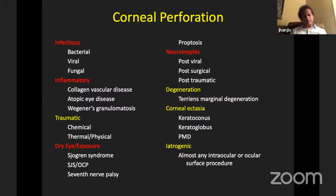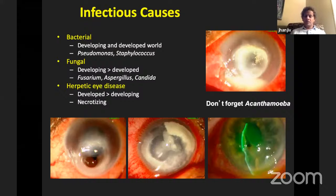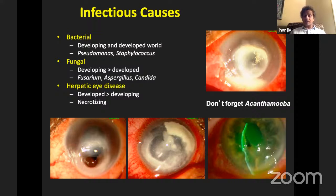Traumatic causes include chemical injuries, thermal and physical injuries, still more common in developing countries. Neurotrophic keratitis from dry eye and exposure, post-viral zoster ophthalmicus — one of the most under-reported causes — and post-surgical cases especially retinal surgery in diabetics are major contributors to neurotrophic keratopathy and corneal thinning. Perforation can also occur in degenerative diseases such as Terrien's marginal degeneration and pellucid marginal degeneration.